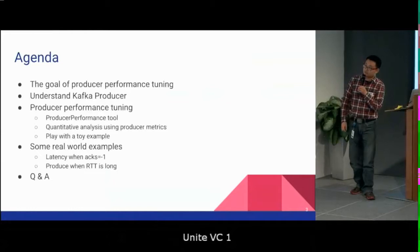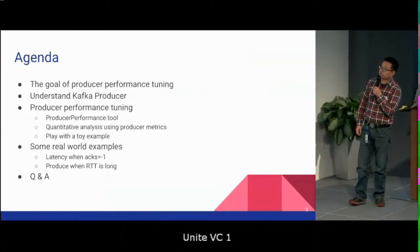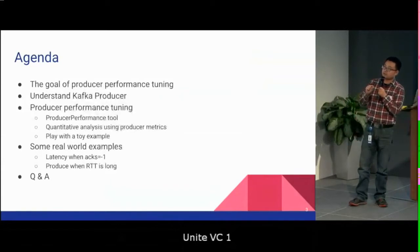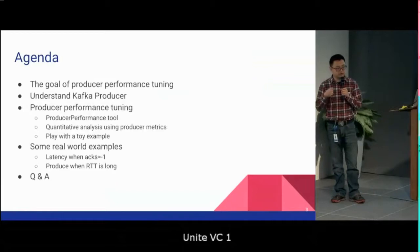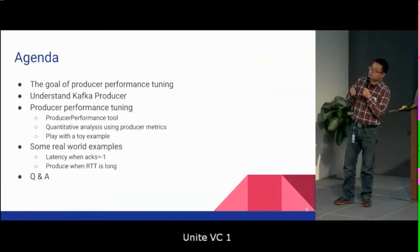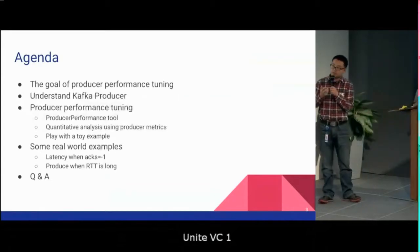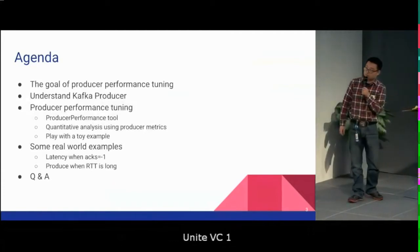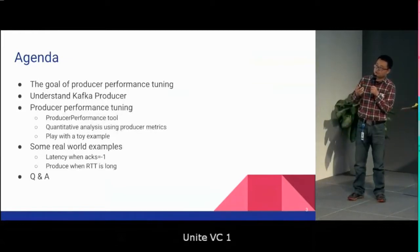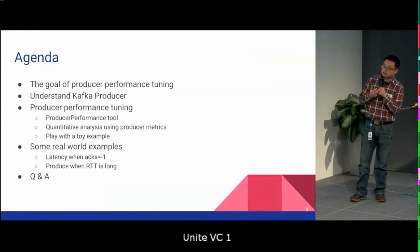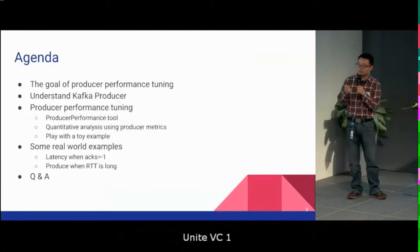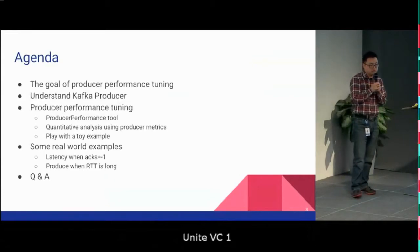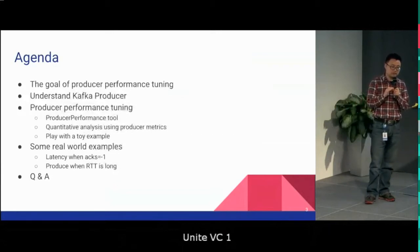Performance tuning is a case-by-case process that's very largely based on different data patterns and your performance objectives. Here's today's agenda: we'll go through the goals of producer performance tuning, then dive into the internal implementation of Kafka producer, then cover how to actually tune it, introduce the producer performance tool in open source, do quantitative analysis using producer metrics, play with a toy example, and then introduce two real-world examples where we tuned the producer performance to achieve very low latency without sacrificing any data guarantee.